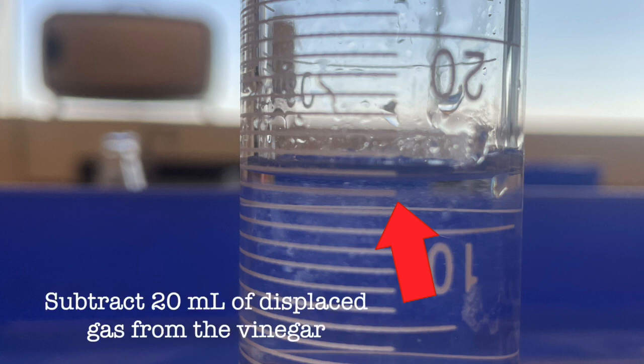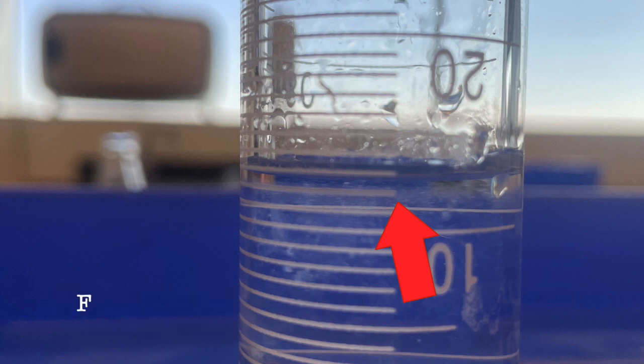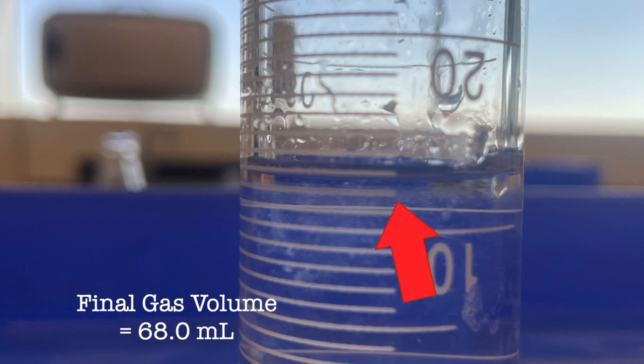Now remember we added 20 milliliters of vinegar, and so that volume needs to be subtracted because that amount was displaced originally. The final gas volume then is 68.0 milliliters.